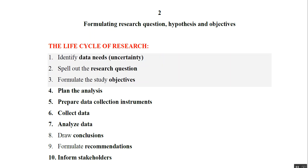Chapter 2 covers the formal research question, hypothesis, and objective. First, we will look at the life cycle of research, which has 10 steps. Step one is to identify the data needs — what are the uncertainties that we need to address. Step two is to spell out the research question, defining exactly what we want to do.